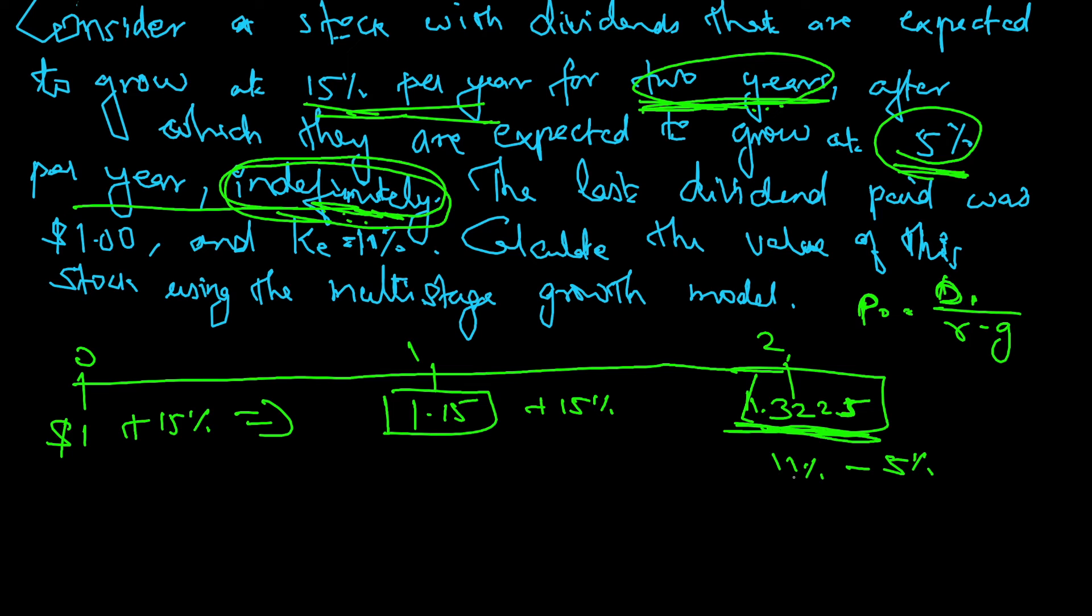1.3225 divided by 6% comes to $22. This will give me the price for the previous year, that's why it is written P0. So here the price should be $22, so the total cash flow here should be $23.15.